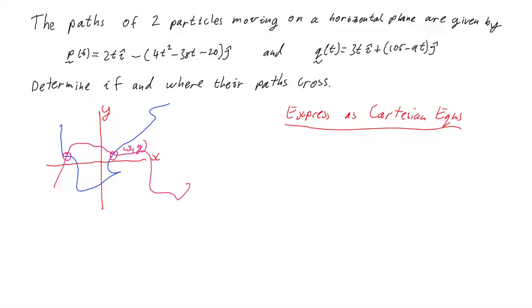So if we do that for equation p, we've got 2ti and negative of 4t squared take 38t take 20j, and so what this means is that we've got x equals 2t and we've got y equals the negative of 4t squared take 38t take 20.